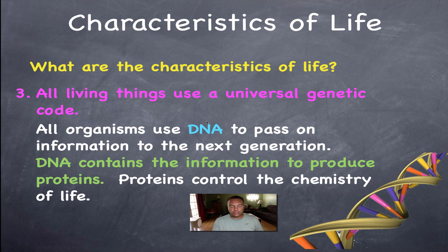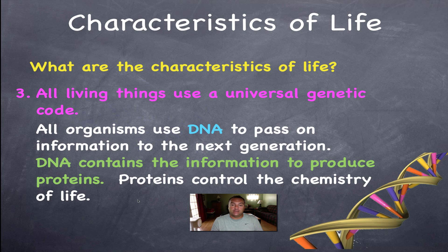All living things have a universal genetic code based upon DNA. DNA contains the information for producing proteins. Proteins are used in every chemical process that occurs inside a living thing — life can't go on without proteins, and you can't make proteins without DNA. We'll spend a lot of time this year on how DNA and proteins work together.